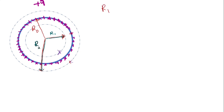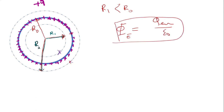For R1, when the radius is less than the radius of the sphere, what do we see inside? The charges are outside. There are no charges inside.